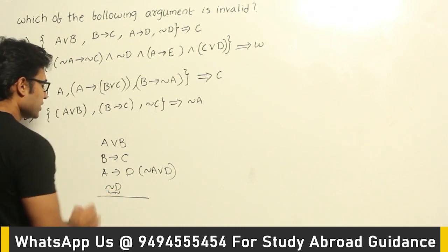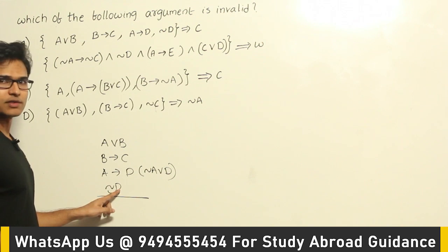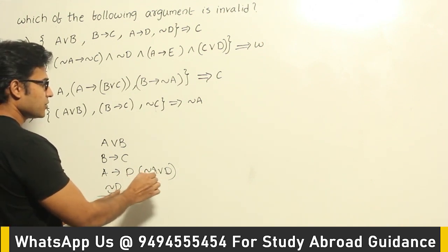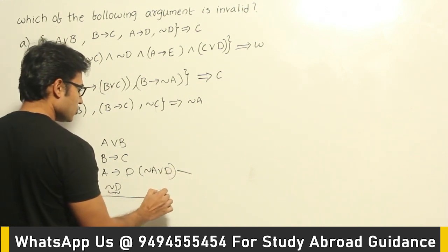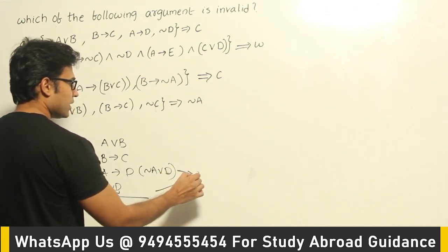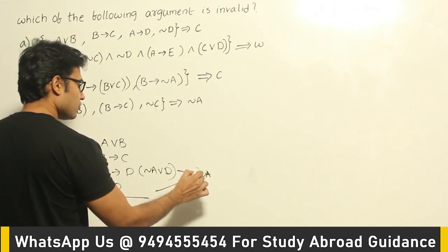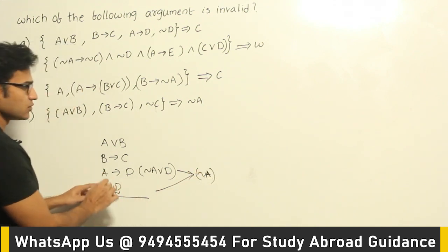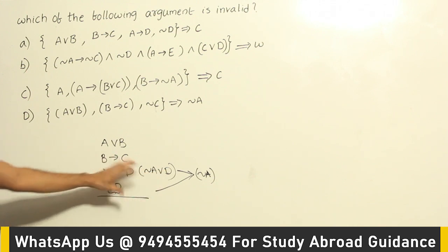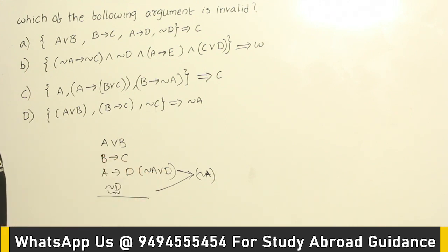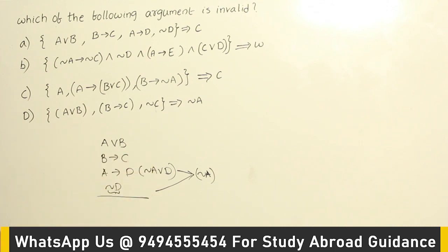Negation D is true means D is false. If D is false and this entire thing has to be true, then definitely negation A has to be true. Therefore from these two premises, negation A is the conclusion. This rule is called modus tollens. You need not memorize the names of the rules — as long as you know what the result is. Just for your information, this is modus tollens.